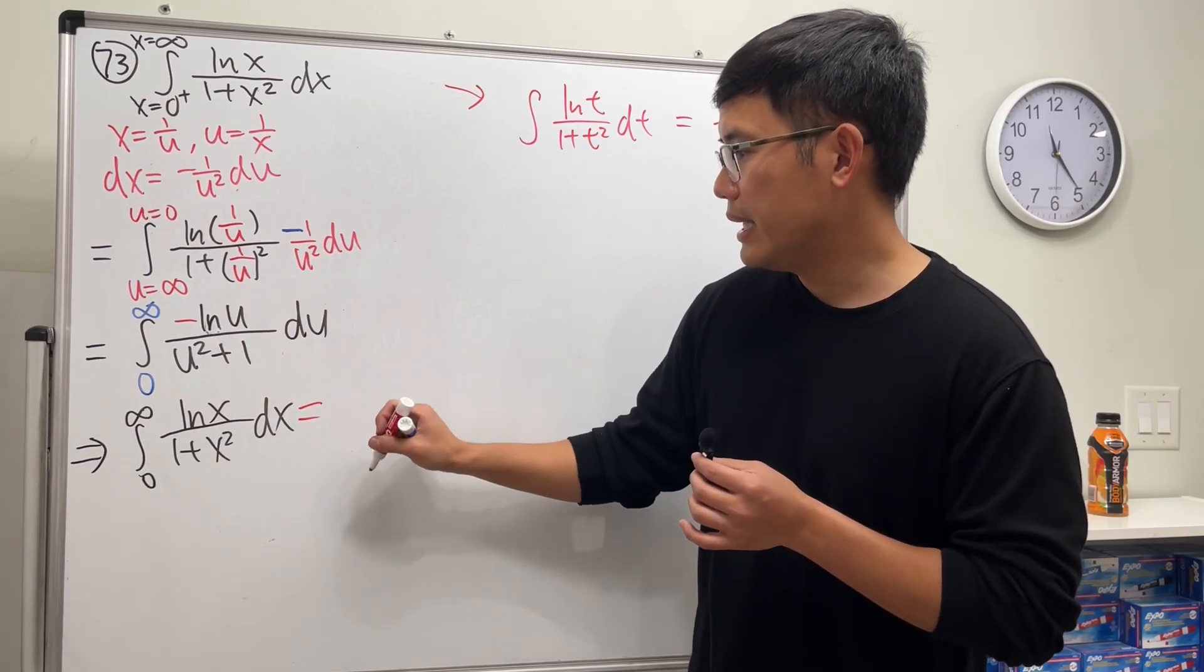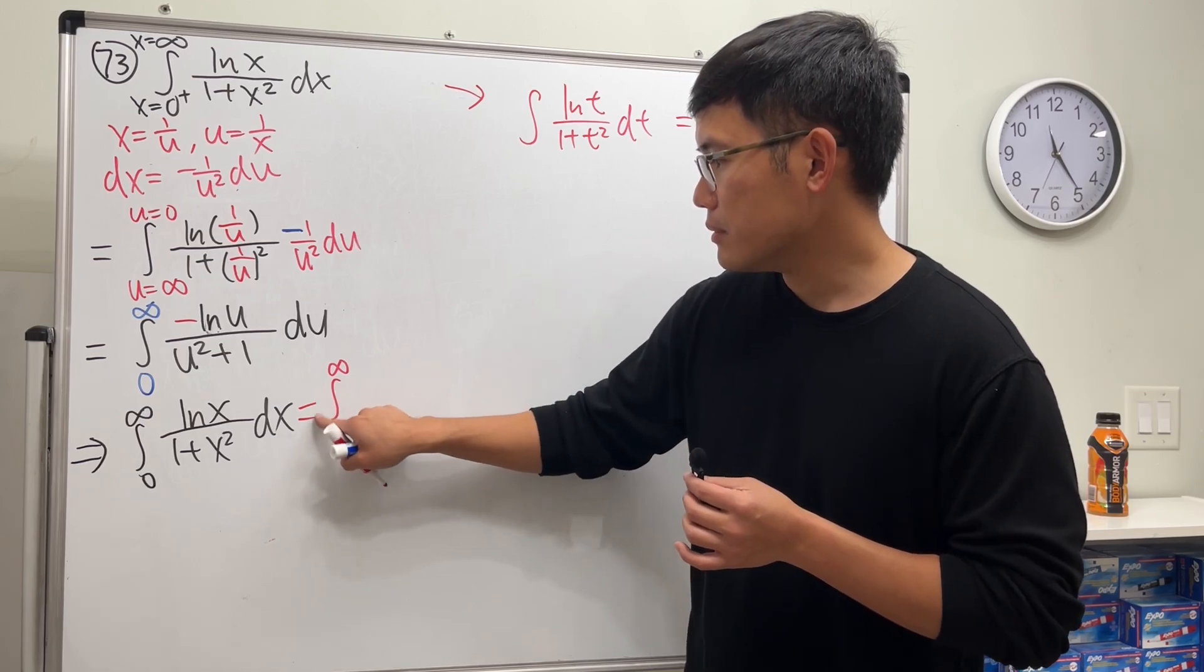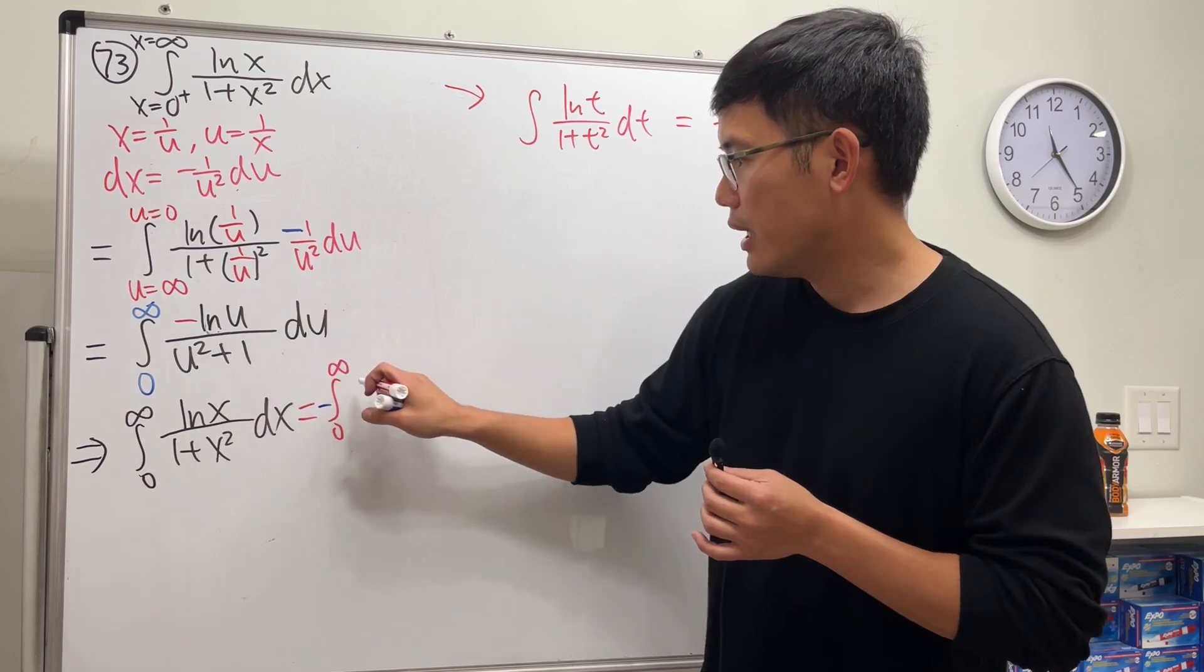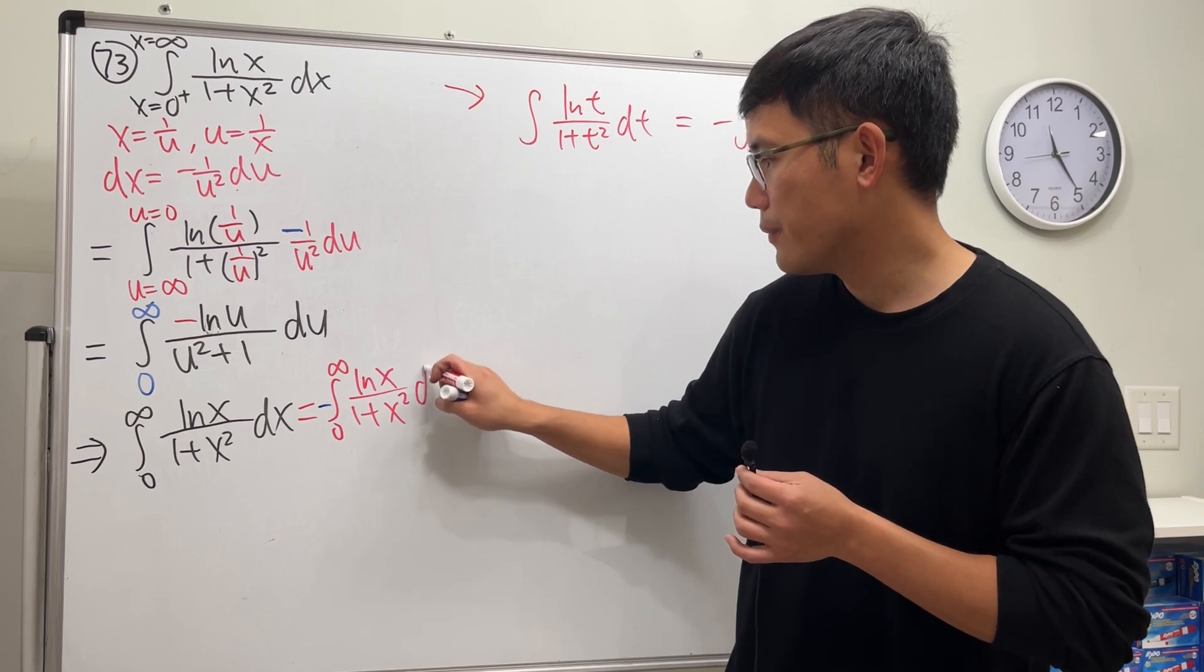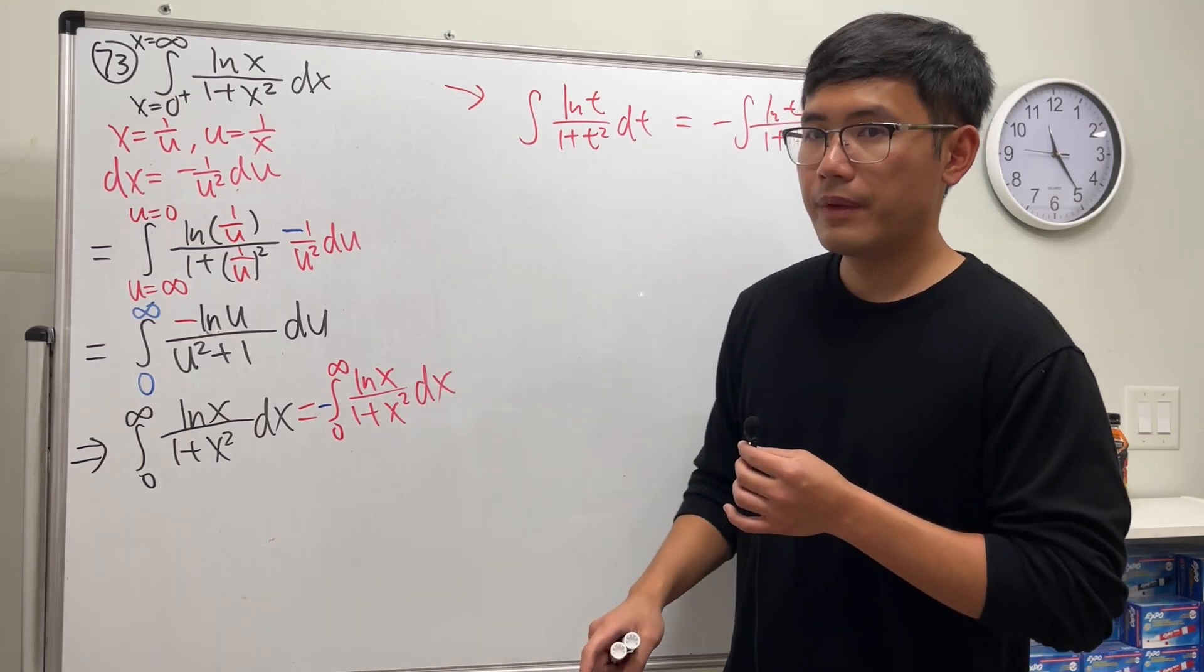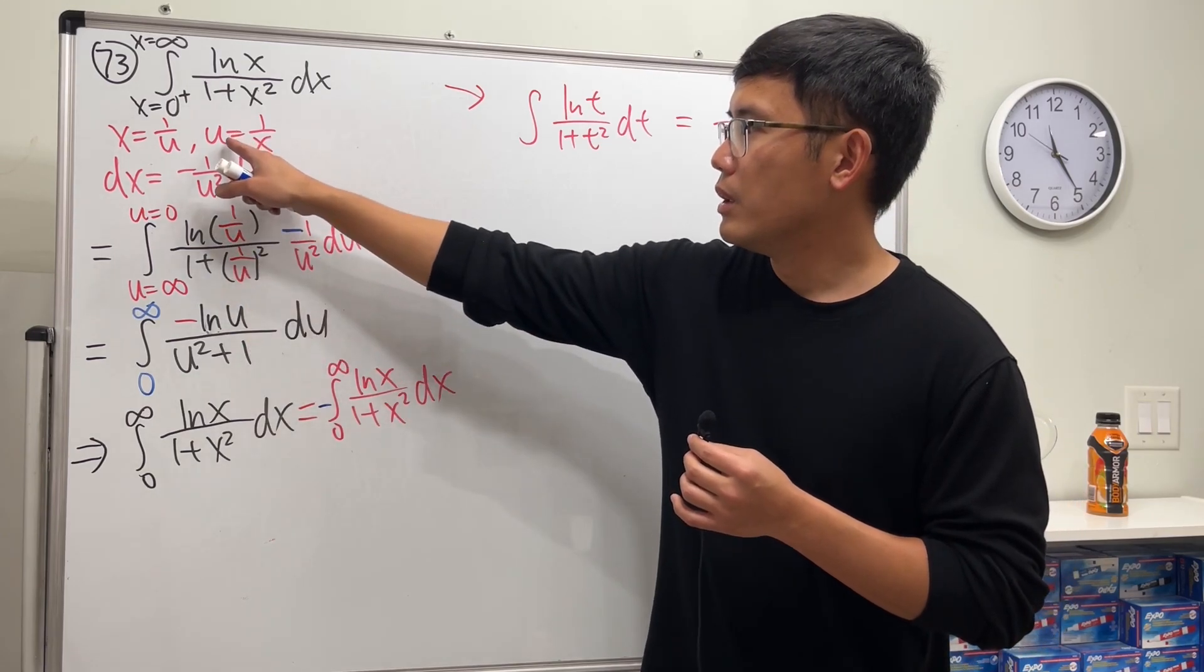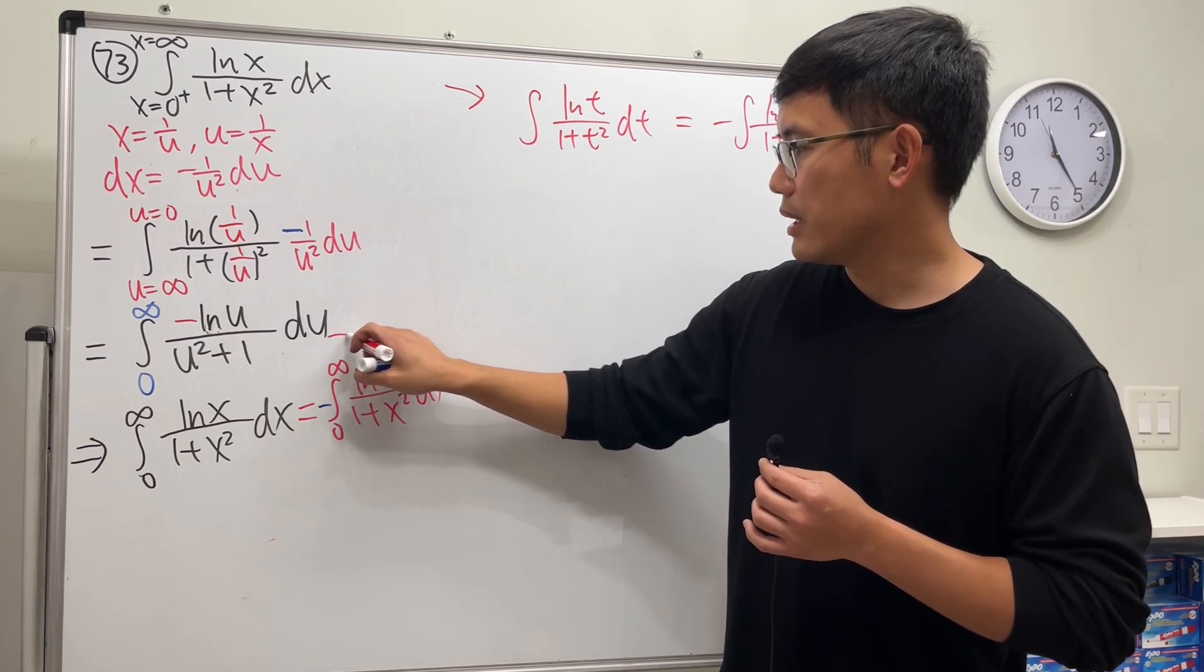Anyway, what I'm going to do is instead of the u I'm going to just write it as the integral going from 0 to infinity. We have this negative and then ln, I will put the x back, and then 1 plus x squared dx again. It's not because I put the 1 over x in here, it's just that I'll just say...